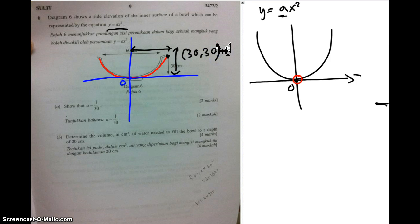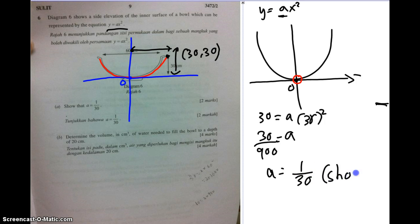So in order to find the A value, the easiest one is we just substitute the 30 into the y and 30 into the x. You have got A will equal to 30 over 900. So A will equal to 1 over 30. Then you can write shown, because this is what they want in part A. They ask you to show that A equals to 1 over 30.